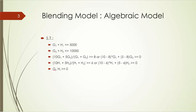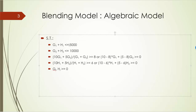First, let's look at the availability constraints. We have 5,000 barrels of Crude Oil 1 available and 10,000 barrels of Crude Oil 2 available. We are going to need G1 plus H1 barrels of Crude Oil 1, so G1 plus H1 must be less than or equal to 5,000. Similarly, G2 plus H2, the total barrels needed of Crude Oil 2, must be less than or equal to 10,000.